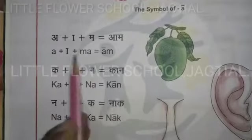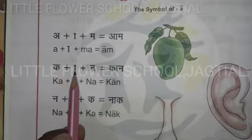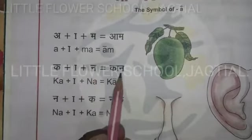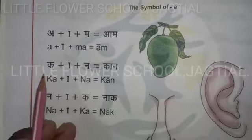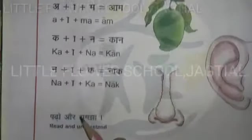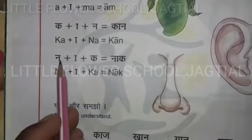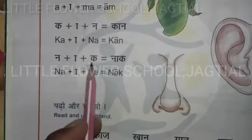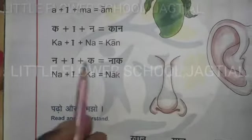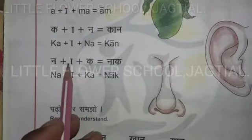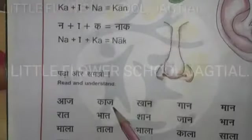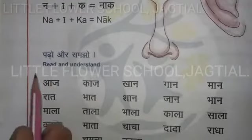Aam means mango. Ka plus aa matra, ka plus na equals kaan. See here - kaan means ear. Ka plus aa matra, ka plus na equals kaan. Next, na plus aa matra, na plus ka equals naak. See here - naak means nose.